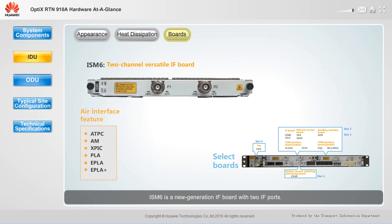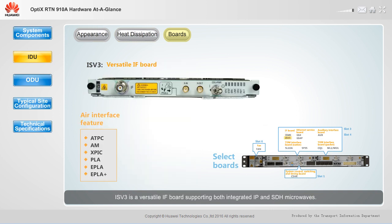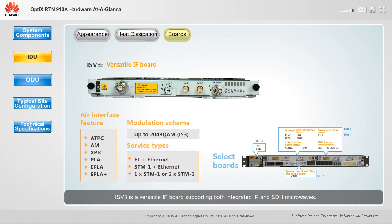IS-M6 is a new generation IF board with two IF ports. IS-V3 is a versatile IF board supporting both integrated IP and SDH microwaves.